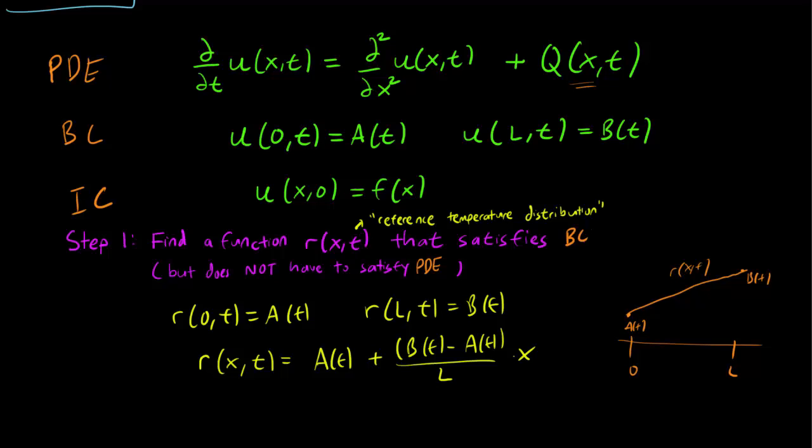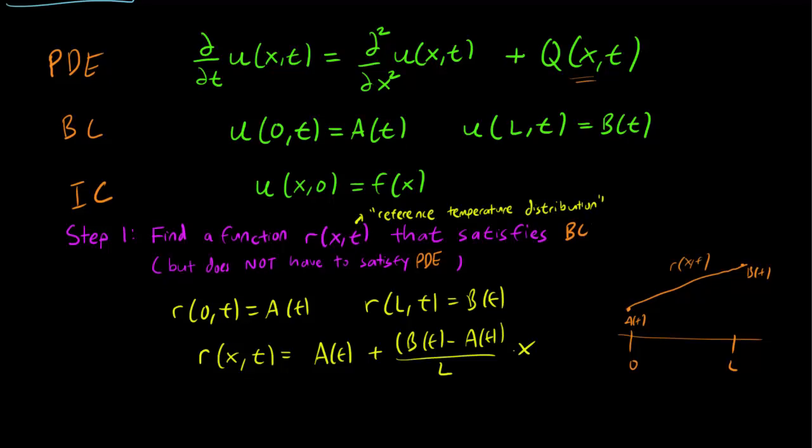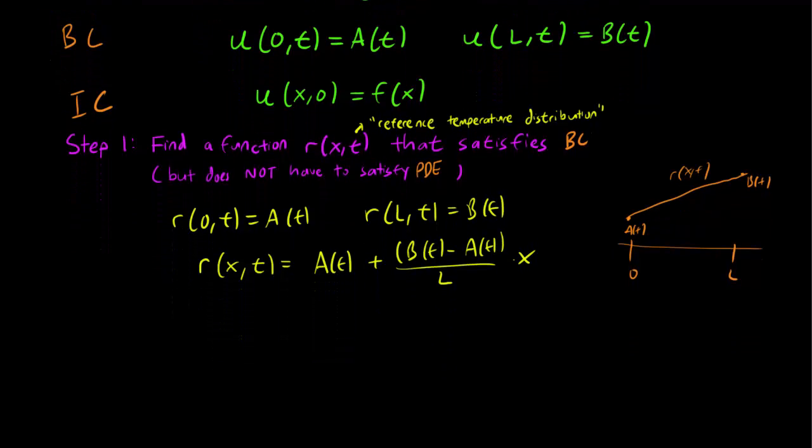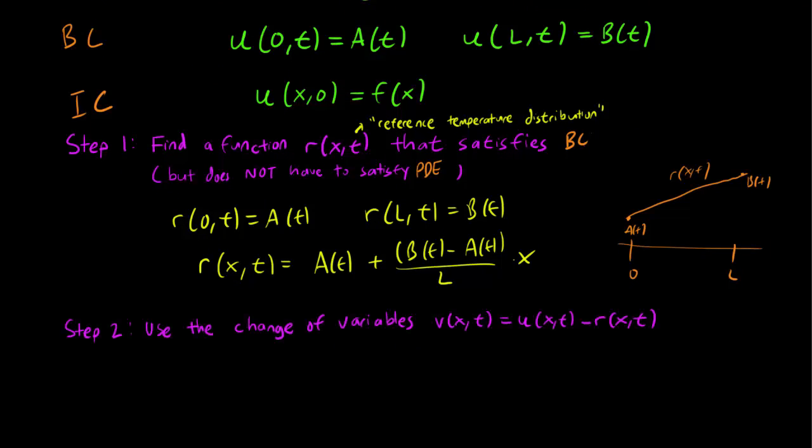So again, this line isn't important, you can make a parabola, whatever you want, but I don't really see any reason not to just use the simplest possible r(x,t) that you can. The next step is to use a trick that we used in the case for time-independent non-homogeneous parts, and we make the substitution, the change of variables, v(x,t) equals u(x,t) minus r(x,t). So we use r(x,t) instead of the equilibrium solution that we did in a previous video.